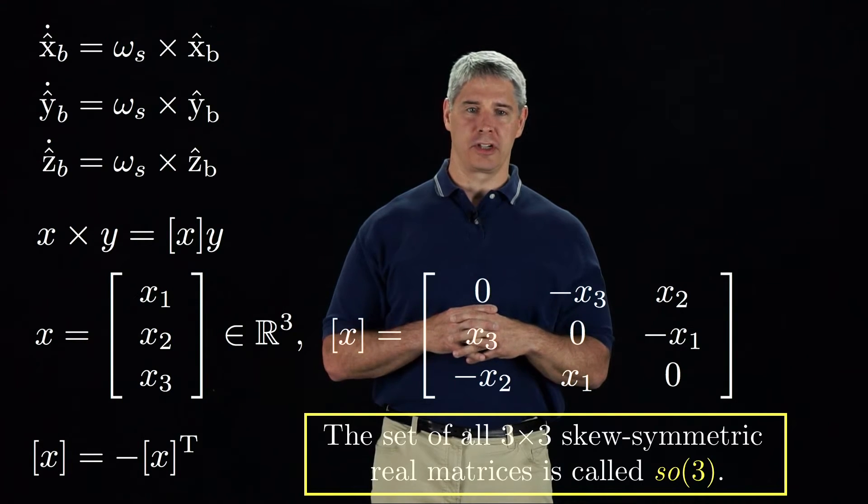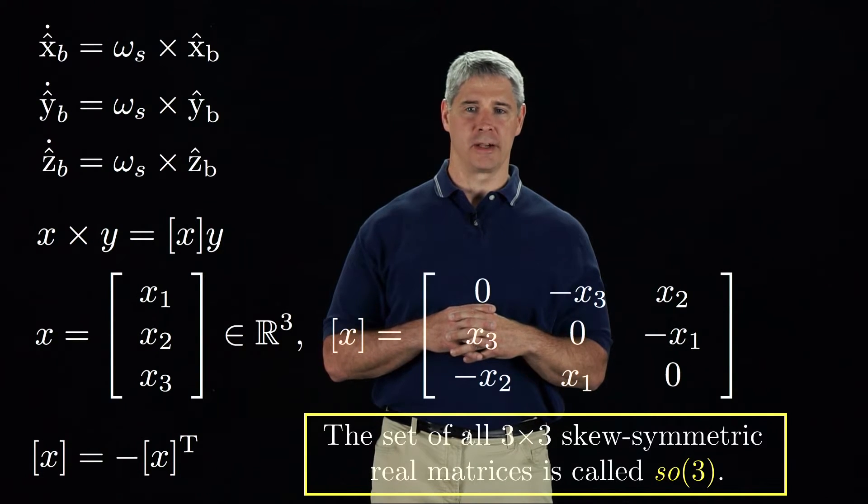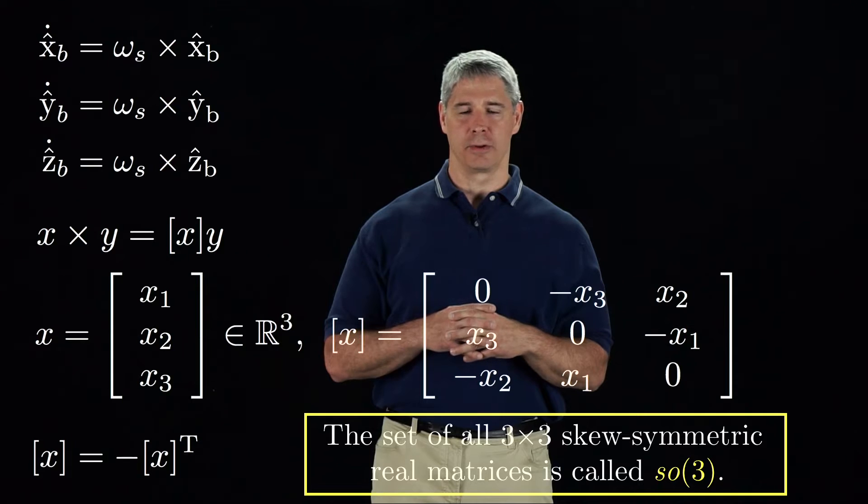The set of all 3-by-3 skew-symmetric matrices is called little SO3, due to its relationship to big SO3, the space of rotation matrices.